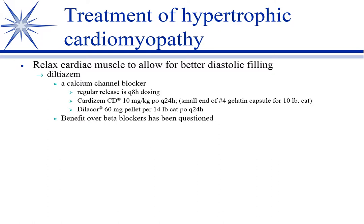I consider diltiazem to be the better lucitrope for relaxing the heart. It comes in different forms - regular release is every eight hours, but most people use a sustained release product. Since all of these are human products, dosing adjustments are needed. For example, a number four gelatin capsule filled with Cardizem CD is about right for a 10-pound cat. With Dilacor capsules, you break the capsule open and find little pellets inside - one pellet is about right for a 14-pound cat.